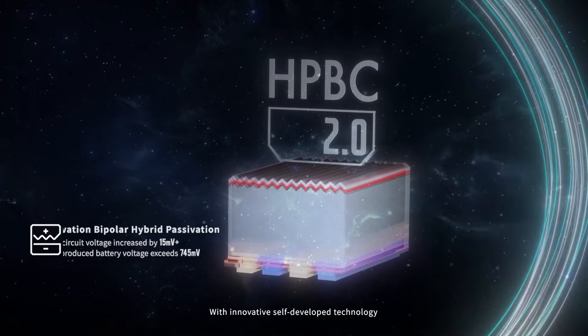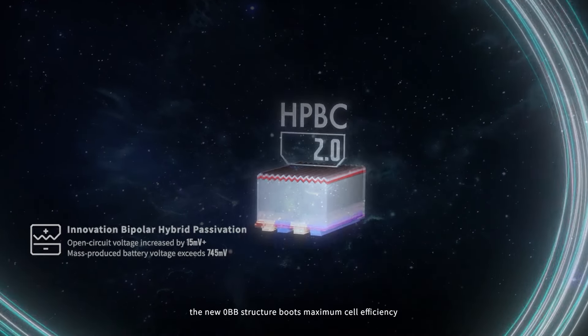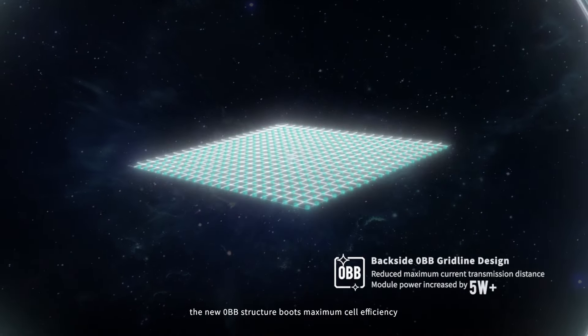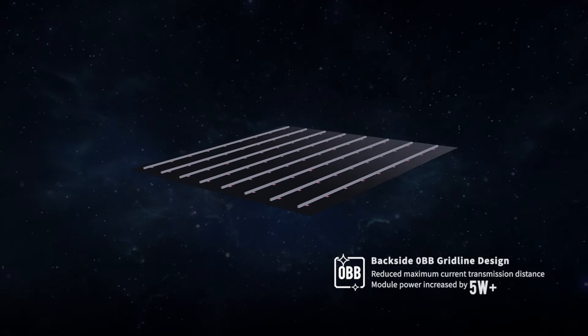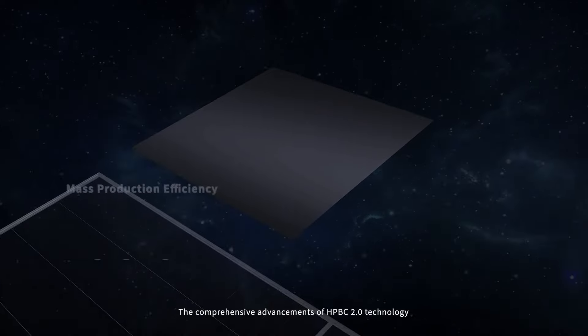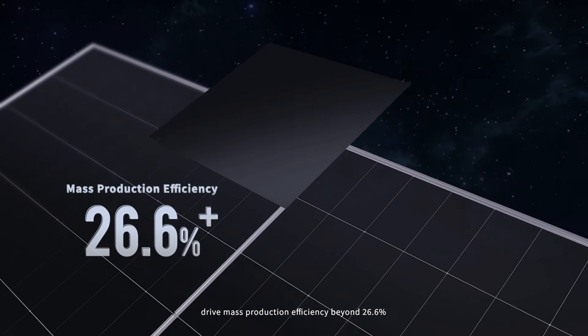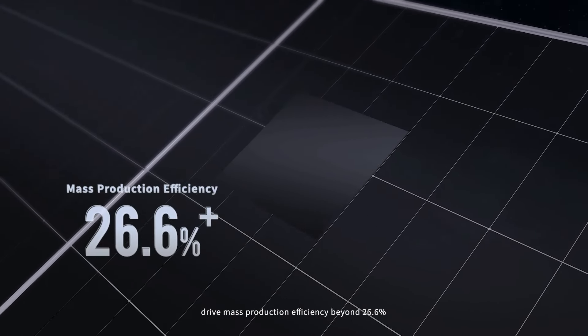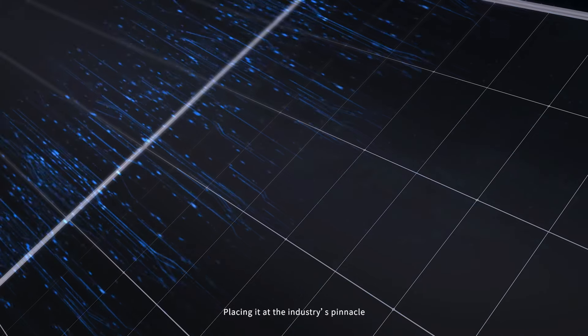With innovative self-developed technology, the new 0BB structure boosts maximum cell efficiency. The comprehensive advancements of HPBC 2.0 technology drive mass production efficiency beyond 26.6%, placing it at the industry's pinnacle.